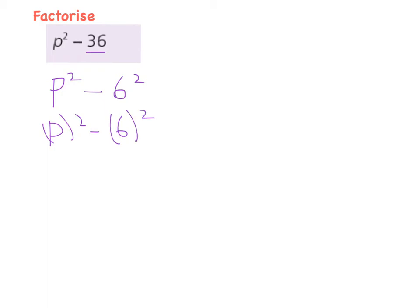And lay my answer out as follows: my two back-to-back brackets, one a plus, one a minus, and p times p gives me p squared, so p here, and six times six will give me 36.